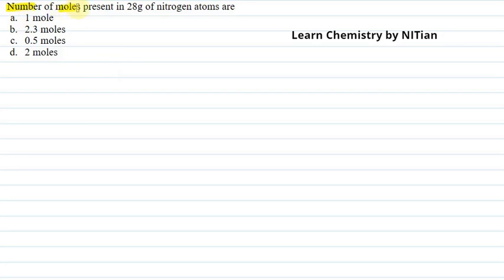The question says, number of moles present in 28 grams of nitrogen atoms are: option A 1 mole, option B 2.3 moles, option C 0.5 moles, option D 2 moles.